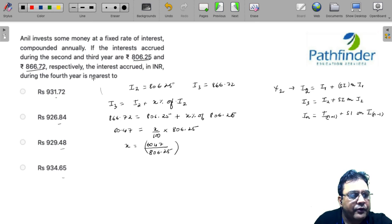Now you are required to calculate the rate of interest for the 4th year. So I4 will be equal to I3, which is 866.72, plus x percent, 6047 upon 806.25 into 100.